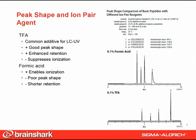TFA at levels typical for UV-based peptide mapping, 0.1%, causes severe reduction in MS sensitivity. So acetic acid and formic acid have been used as alternatives to TFA for LC-MS of peptides, but formic acid has become more common. However, users have noticed that peak efficiency and peak shape in the presence of 0.1% formic acid are not as good as with 0.1% TFA. This is particularly evident with basic peptides as shown in this figure.